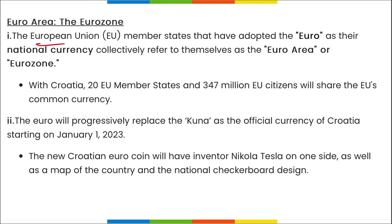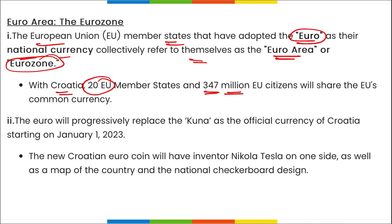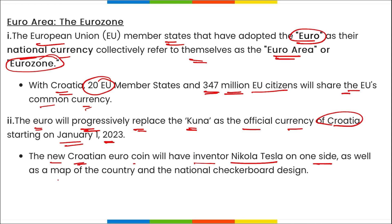The Eurozone refers to EU member states that have adopted the euro as their national currency. With Croatia, there are now 20 euro member states and 347 million European citizens sharing the euro. The euro will progressively replace the kuna as Croatia's official currency starting from 1st January 2023. The new Croatian euro coin will feature inventor Nikola Tesla on one side and the map of the country with the national checkerboard design on the other.